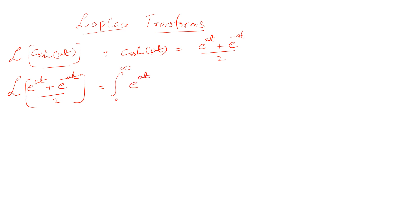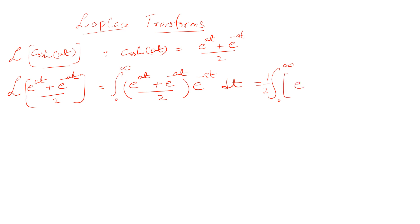Now we'll integrate from 0 to infinity. The Laplace transform of cosh(at) will be multiplied by e^(-st). One should be very familiar with the bypass rule for solving Laplace transform questions. I can write this as 1/2 outside, multiplied by e^(at) · e^(-st), which gives e^(-t(s-a)), and e^(-at) · e^(-st), which gives e^(-t(s+a)).